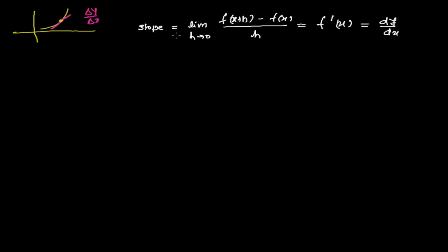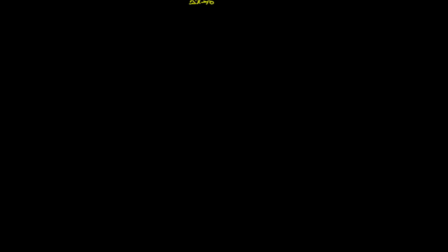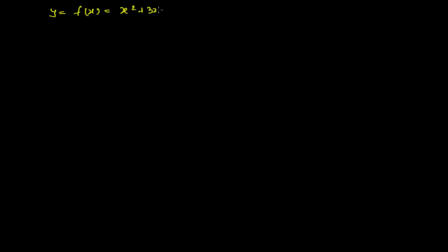In some books you may see delta x tends to 0 instead of h tends to 0. So h and delta x are the same thing — just a small distance away from the point where we find the derivative. Don't be confused; these all represent the same thing. Now, to understand the derivative concept more, I'm taking a function y = f(x) = x² + 3x + 2, and I'm going to work through derivative concepts using this curve.